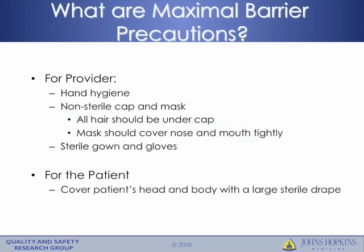Next, I'll discuss maximal barrier precautions. It's worth defining what these are. For the provider, this means performing hand hygiene, donning a non-sterile cap and mask, and sterile gowns and gloves. All hair should be under the cap and the mask should cover the nose and mouth tightly. For the patient, it's important to cover the patient's head and body with a large sterile drape.